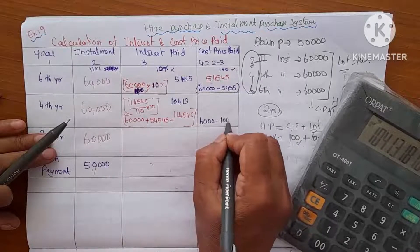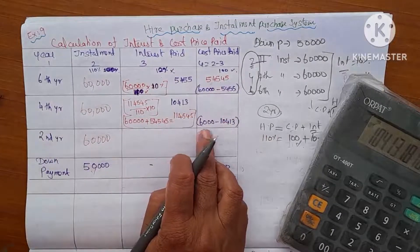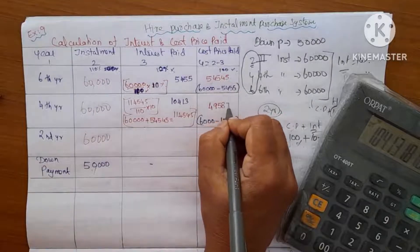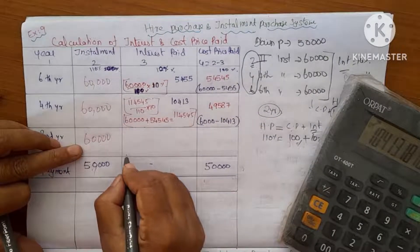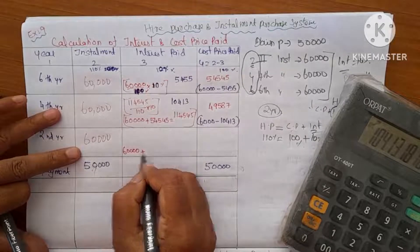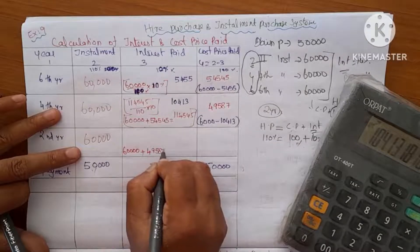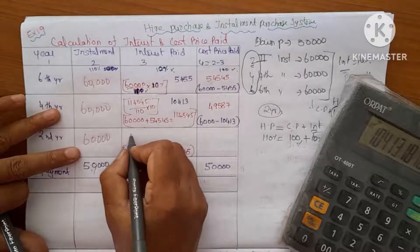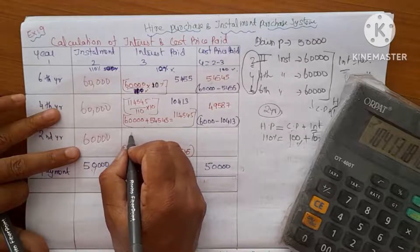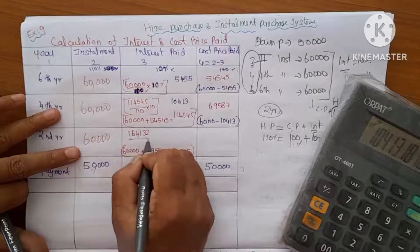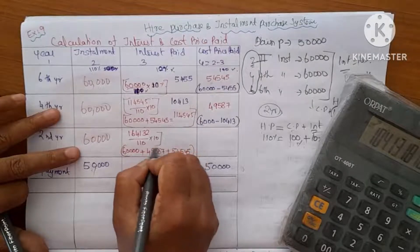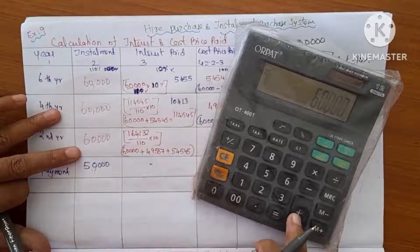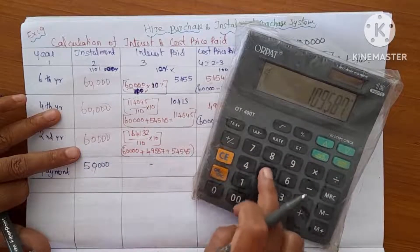So the second installment cost price is 60,000 minus 10,413 equals 49,587. For the third installment, the cumulative amount is 60,000 plus 49,587 plus 54,545 equals 164,132.